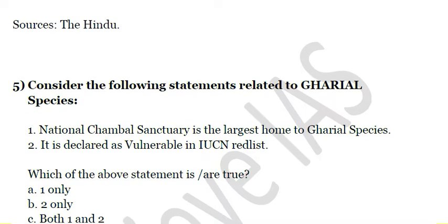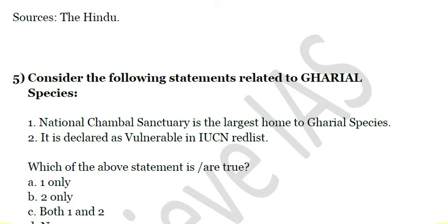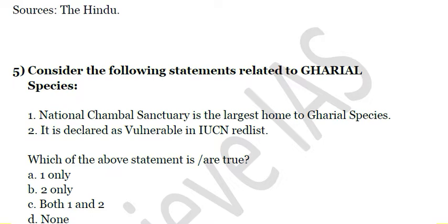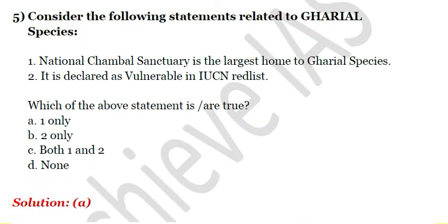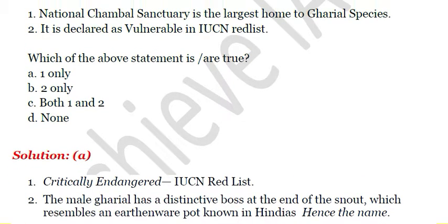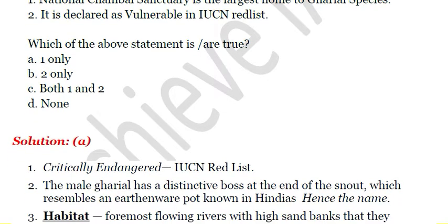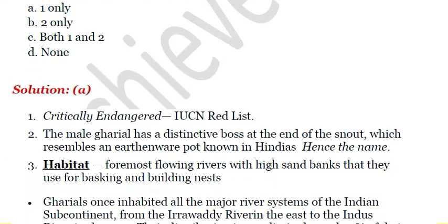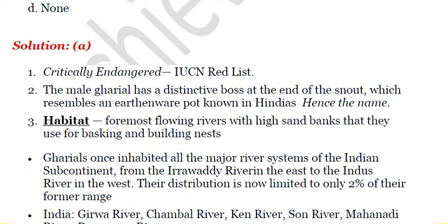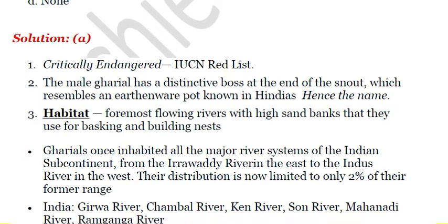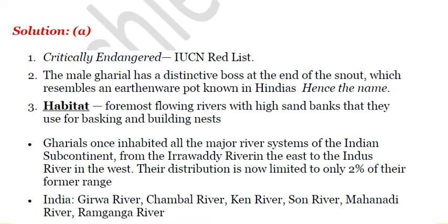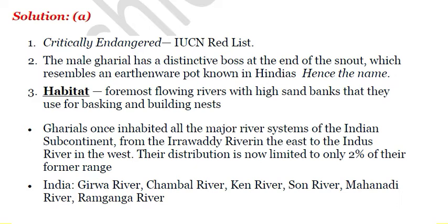Next question: consider the following statements related to Gharial species. First, National Chambal Sanctuary is the largest home to Gharial species. Second, it is declared as Vulnerable in the IUCN Red List. Which of the above statements is correct? Only the first statement is correct — National Chambal Sanctuary is the largest home to Gharial species. It is not Vulnerable but Critically Endangered. The male Gharial has a distinctive boss at the end of the snout which resembles an earthen pot known as 'ghara' in Hindi, hence the name. Its habitat is fast-flowing rivers with high sand banks used for basking and building nests.